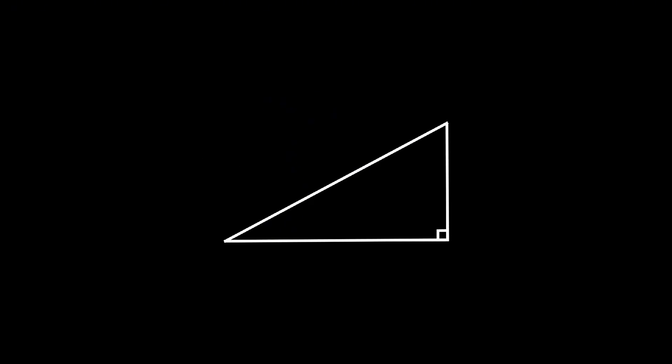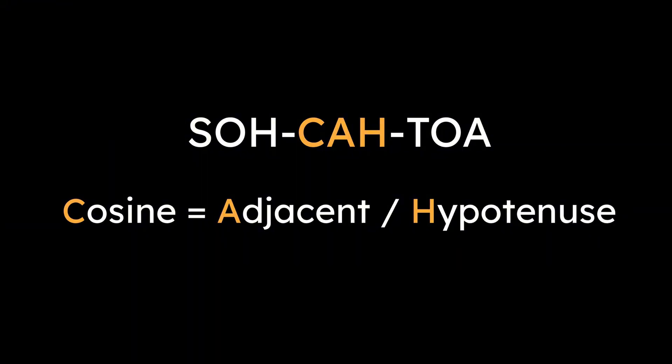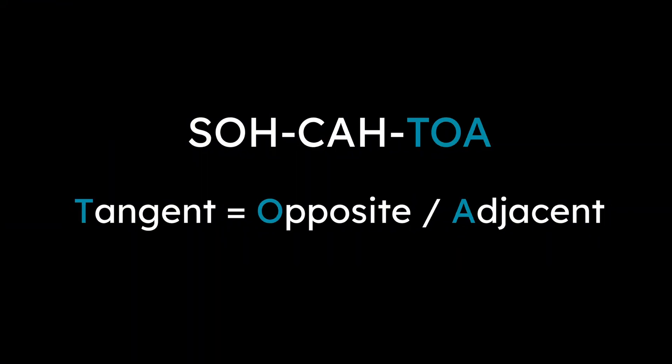Each of these compares different sides of the triangle relative to a given angle. The acronym SOHCAHTOA helps you remember them. Sine is opposite over hypotenuse, cosine is adjacent over hypotenuse, and tangent is opposite over adjacent.